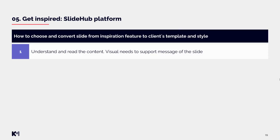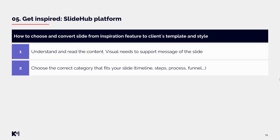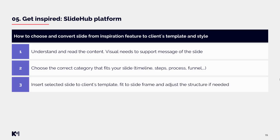First you need to understand and read the client's content, because the visuals you choose need to support the message of the slide — content is always the most important thing. Once you know what the content is about you can choose the correct category that fits your slide: timeline, steps, process, funnel, whatever the slide is about. Once you have chosen your preferred slide, you insert it into the client's template and fit it to the slide frame, adjusting the structure if needed.